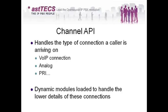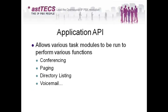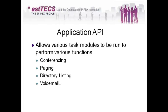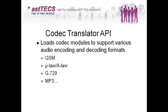The Application API allows various Asterisk modules to run and perform various functions — for example, conferencing, paging, directory listing, and voicemail. This Application API also handles all Asterisk applications; for example, the Dial application and the Answer application used in your dial plan — all these Asterisk-related applications are handled by the Application API.